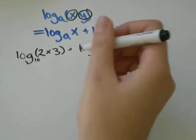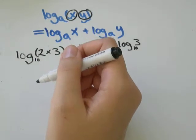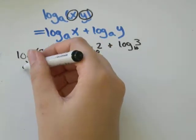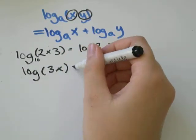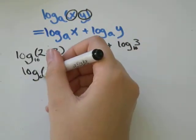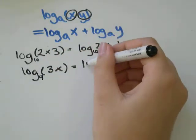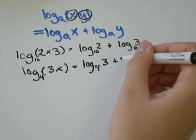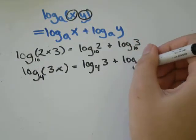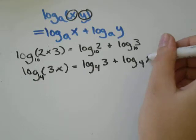Let's do another one. Let's say we had log of three x. Let's make it a base this time, let's say four. That would be log base four of three plus log base four of x.